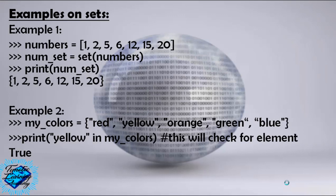Examples on sets. Example 1: numbers equals open square bracket 1, 2, 5, 6, 12, 15, 20, num_set equals set open parenthesis numbers close parenthesis, print num_set. We will get open curly bracket 1, 2, 5, 6, 12, 15, 20 close curly bracket.